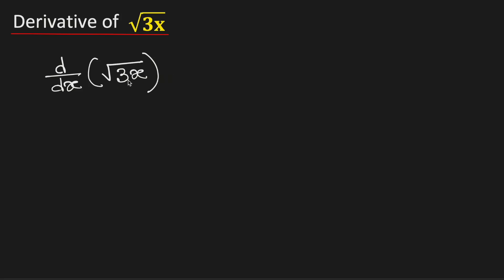In this video we will find the derivative of square root of 3x. At first we will write square root of 3x as root 3 times root x.